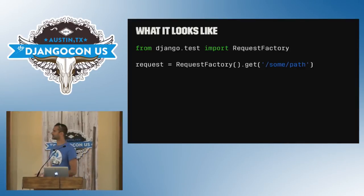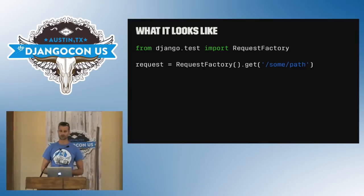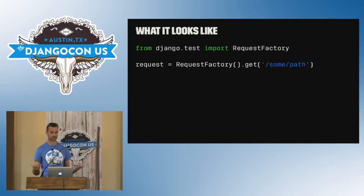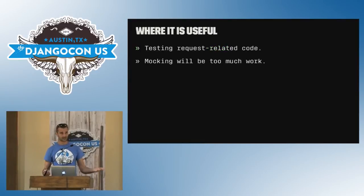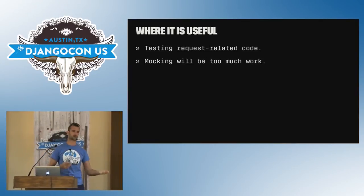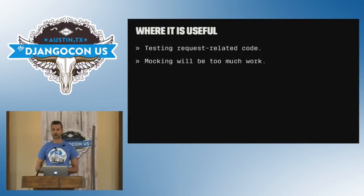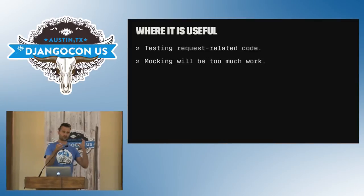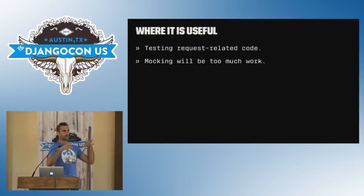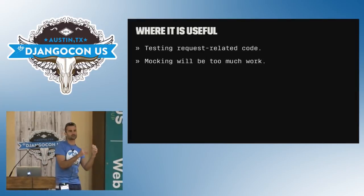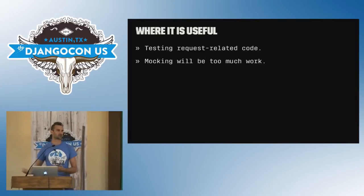The easiest way of using it: it's in the Django test module and you just import it from there. You use it similarly to the requests library — you have a get or post, pass in the URL and parameters you want to use. One of the things I've used it for is testing request-related code in views, where you would otherwise have to mock quite a lot of request functionality — which ends up being a lot of mocking code just to get that little piece of functionality when there's already something that can construct it.